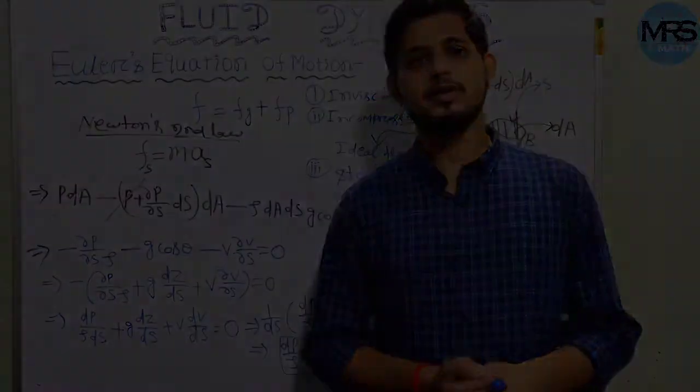If we move a small distance dS, the pressure at point B changes. Since parameters change over a small distance, we use Taylor's expansion. The pressure at S + dS is P + (∂P/∂S)·dS. So the force at point B is (P + ∂P/∂S·dS)·dA, acting normal to the surface and toward the element.